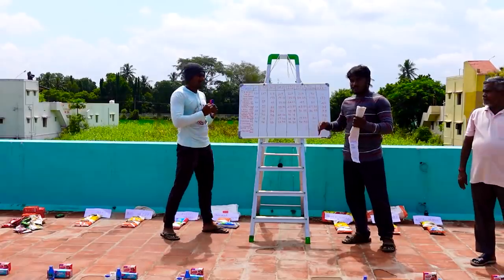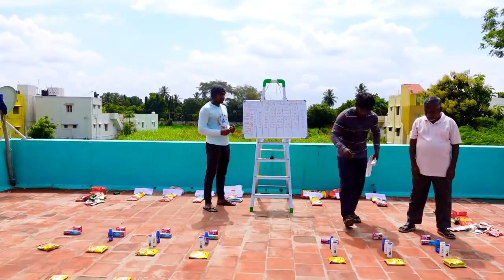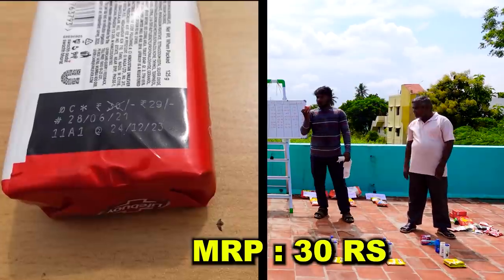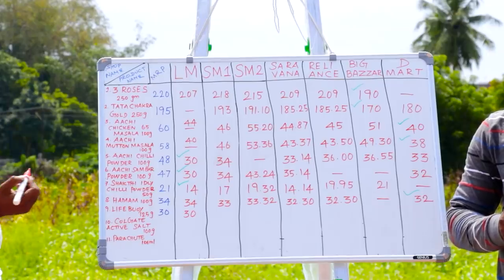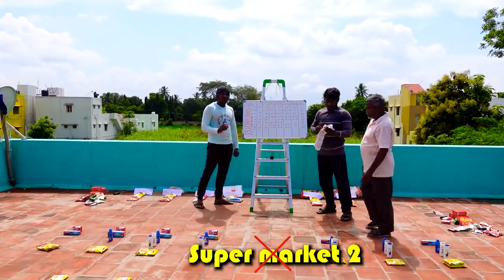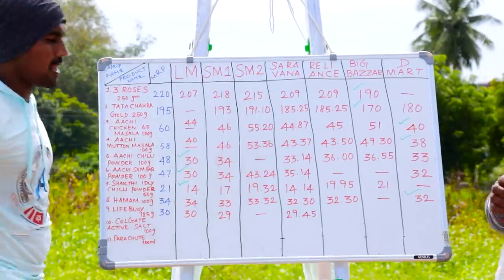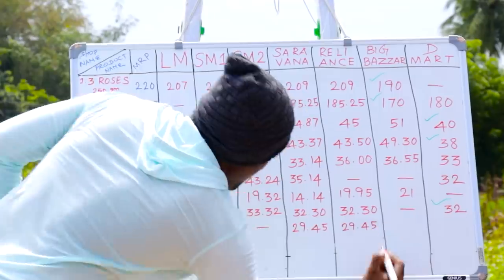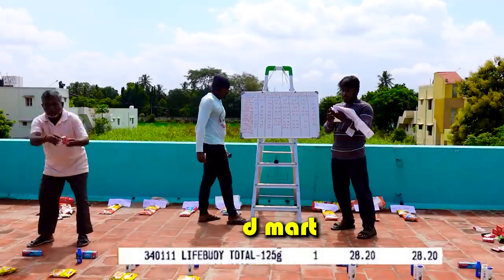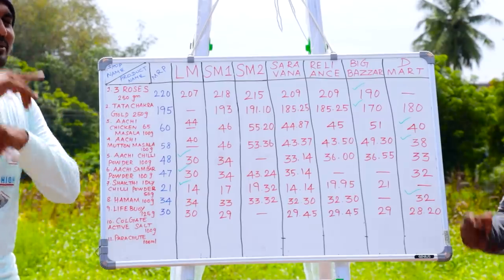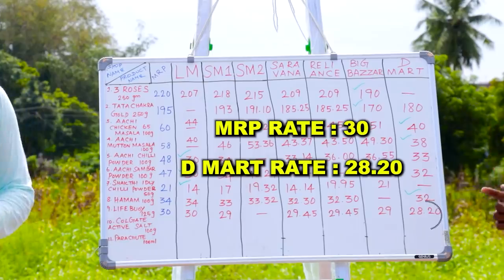There is a difference. Next, Lifebuoy is 125. This is the MRP rate at 30. Local market is 30. Supermarket is 29. The market is 29, then 32, then 29. Reliance market is 29. Big Bazaar is 29. D-Mart is 28 to 29. So this is the absolute winner — D-Mart. The MRP price difference is about 1 to 2 rupees.